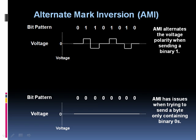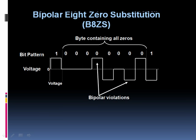The fix for AMI, and what we typically use in the real world, is something called B8ZS — Bipolar 8-Zero Substitution. We represent a byte of all 0s by creating a couple of bipolar violations. Notice on screen that just before this byte of all 0s, we had a positive voltage representing a binary 1. When we get to the 4th of those 8 zeros, we send another positive voltage — creating a bipolar violation. Then we create another bipolar violation with two consecutive negative voltages at the 5th and 7th bit positions.